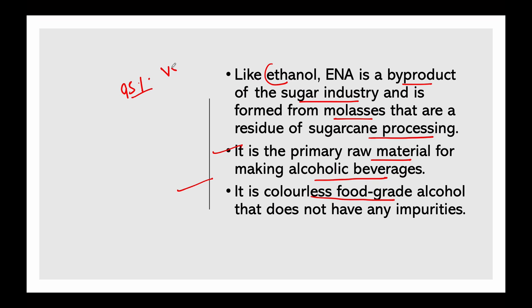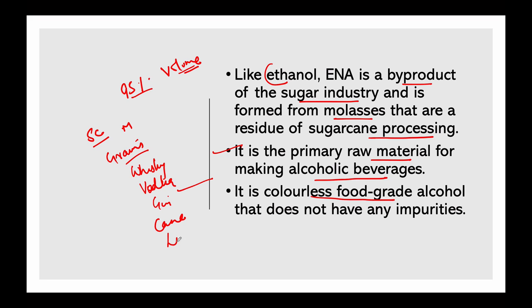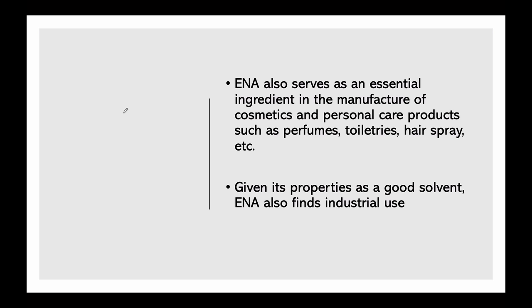ENA typically contains 95% alcohol by volume. It is derived from different sources: sugarcane molasses and grains. It is used in the production of alcoholic beverages such as whiskey, vodka, gin, cane liquors, and alcoholic fruit beverages — all of these are made from Extra Neutral Alcohol.